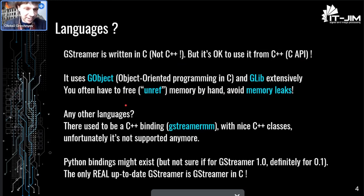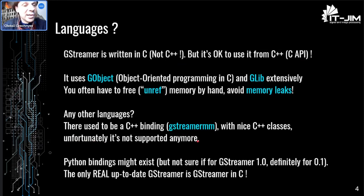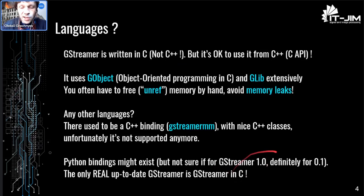What about other programming languages? There used to be a C++ binding GStreamerMM with nice C++ classes, but unfortunately it's not supported anymore. A Python binding should exist, but likewise I'm not sure if it supports the most recent GStreamer version. If you want full support and the most recent version, make sure to use GStreamer's C API — that's the real up-to-date GStreamer.